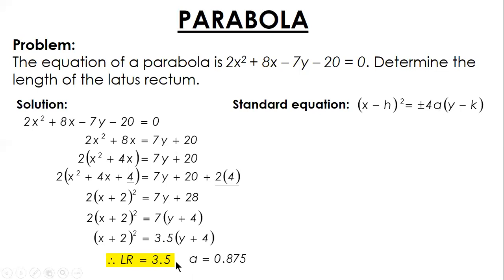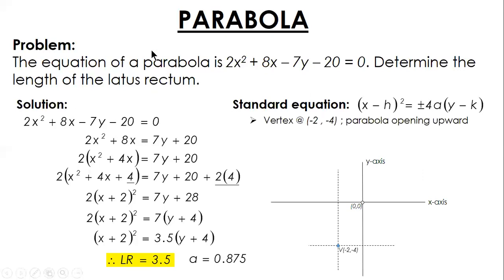Actually, that's where the problem ends because we found the length of the latus rectum. But if you want to extend the problem, you can plot it. First is the vertex. The vertex is located at (-2, -4). Why? Because in the standard equation, the default is negative. Since it's positive 2, therefore h is -2. Because the consideration is x minus (-2) to make it positive. Therefore, our h is -2 and our k is -4. So from the origin, -2 for x, -4 for y, that's the vertex. And then opening upward, it's positive.